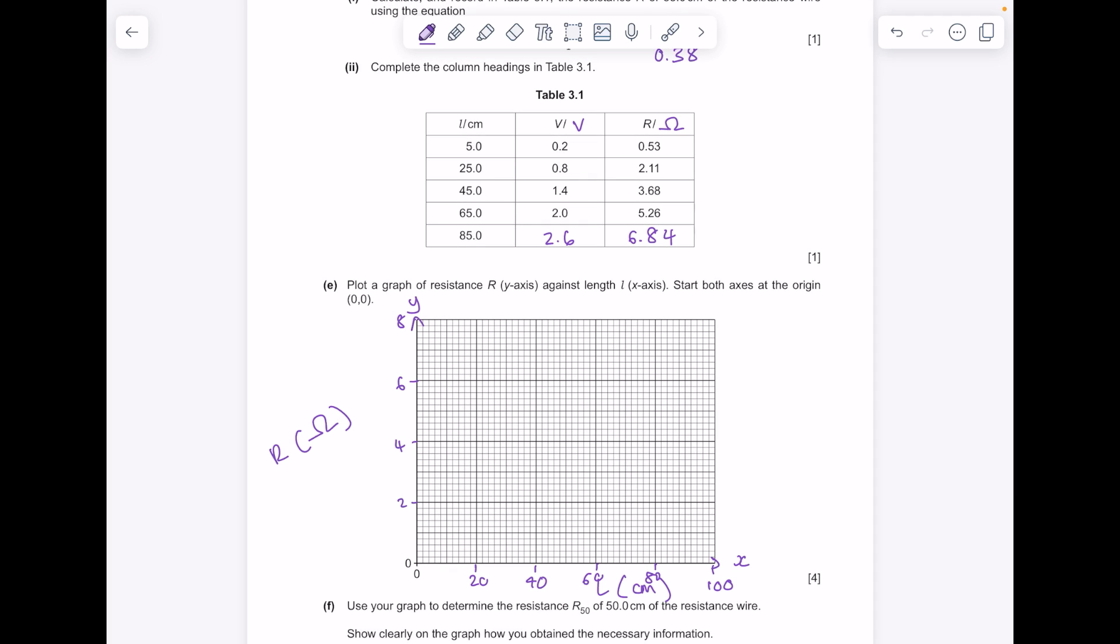So we are plotting these two columns here. So at 5 centimeters we have a resistance of 0.53, 25 centimeters 2.11, 45 centimeters 3.68, 65 centimeters 5.26, 85 centimeters 6.84.